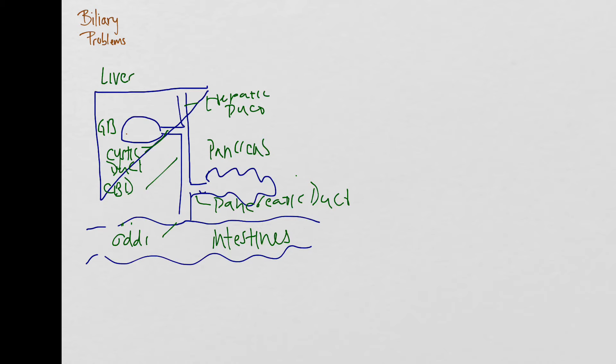The first thing that can happen is your patient can develop little gallstones, and these stones can get stuck at the neck of the gallbladder intermittently and cause pain. But as long as there aren't any signs of active inflammation or infection, this is called symptomatic cholelithiasis.